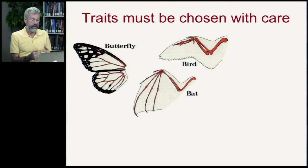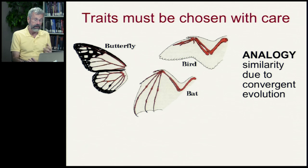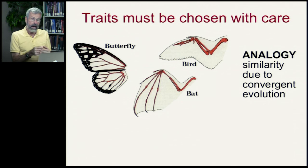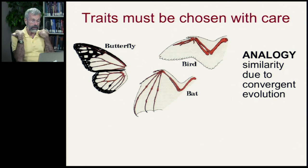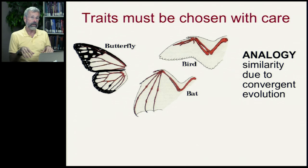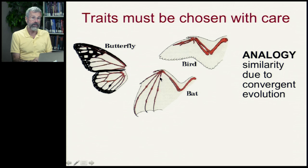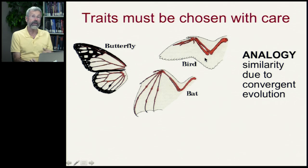Butterflies have wings, birds have wings, bats have wings — but these are due to the common problem of wanting to be able to move through the air. A butterfly's wings evolved from gill flaps on their back. Birds and bats both modified their forearms to become wings, but this is very separate. Bats are not related to birds at all — they're mammals, descended from tree shrews. And birds are descended from dinosaurs. So these evolved very separately — these are not homologies.